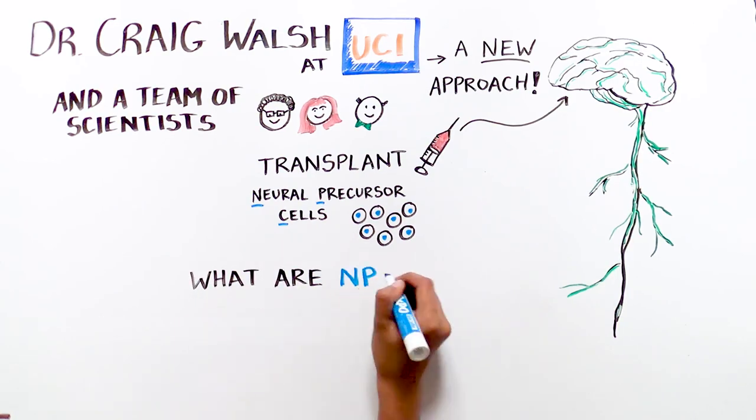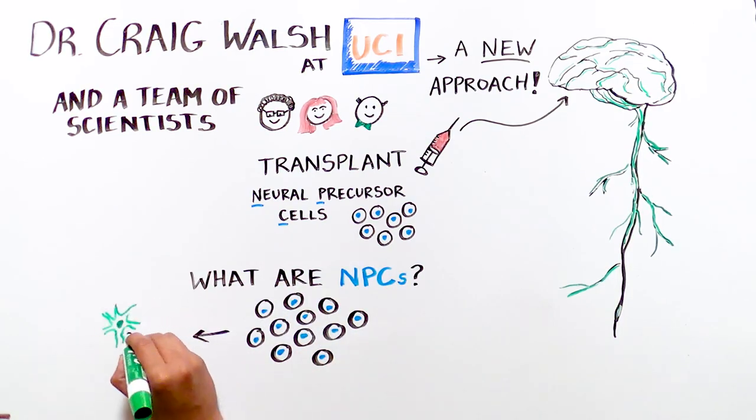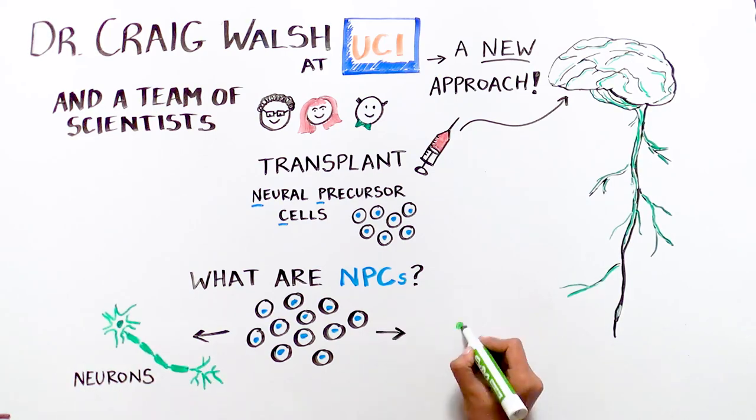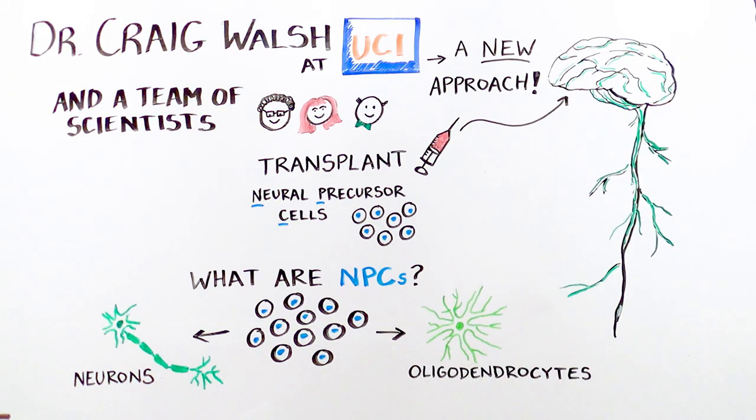What are NPCs? This is a group of cells that can become three different cell types, including neurons and oligodendrocytes, the cells that produce myelin.